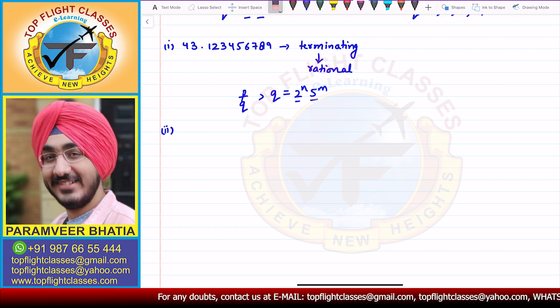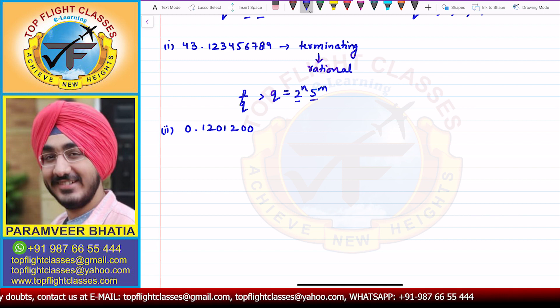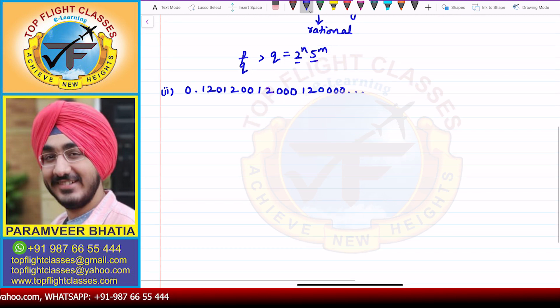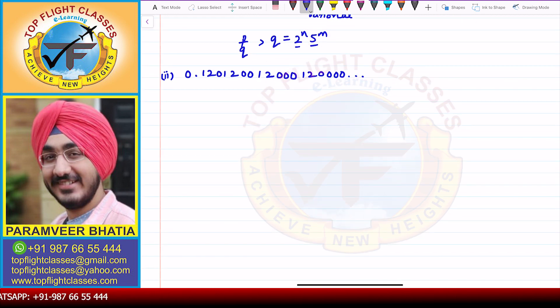Then in the second case, the number that we have is 0.120120012000... Then 1, 2 and 4 zeros, and it goes on. So it is a patterned form, but if you can see here, it is going on, it is not stopping, it is not terminating. So that means we have a non-terminating form.